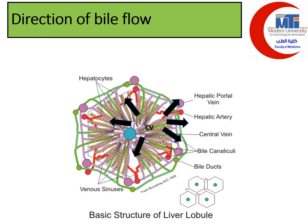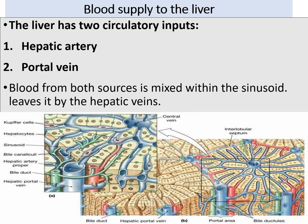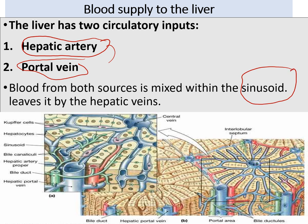Bile is synthesized in hepatocytes and must exit the liver, so its direction is opposite to blood flow — from center to periphery toward the portal tract area. The liver has two blood sources: the portal vein, which carries approximately 75% of blood supply, rich in nutrients but oxygen-poor from the gastrointestinal tract; and the hepatic artery, carrying about 25%, which is nutrient-poor but oxygen-rich.